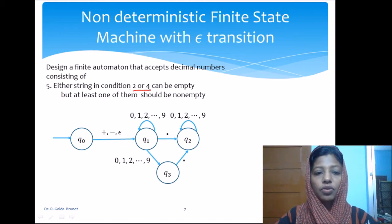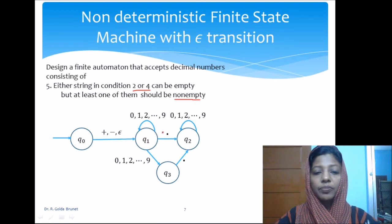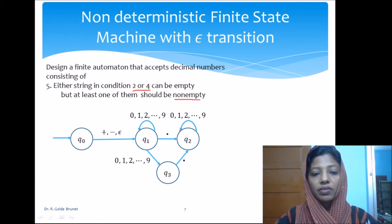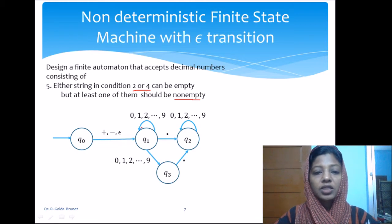However, there is a problem: both strings of digits can be empty with the current design. From q0 we can take the epsilon transition to q1, skip the self-loop, go directly to q2 on the decimal point, and skip the self-loop at q2 as well. This makes both digit strings empty, which is not allowed.